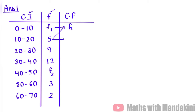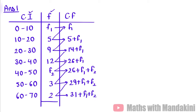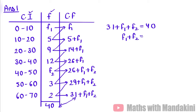Starting cumulative frequency: F1, then 5 plus F1, then 14 plus F1, then 26 plus F1, then 26 plus F1 plus F2, then 29 plus F1 plus F2, and finally 31 plus F1 plus F2. The total of frequency is equal to 40. So from this we get our equation 1: F1 plus F2 is equal to 9.